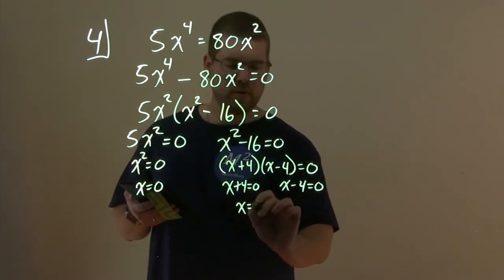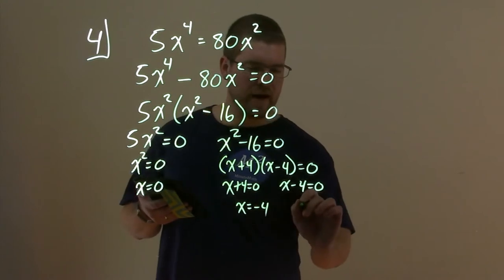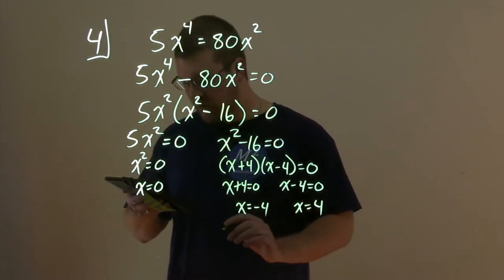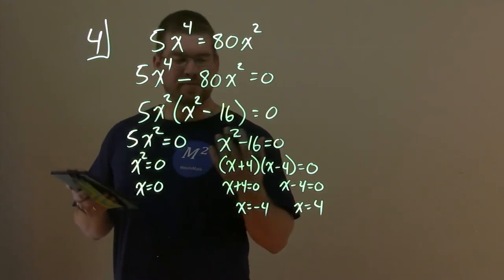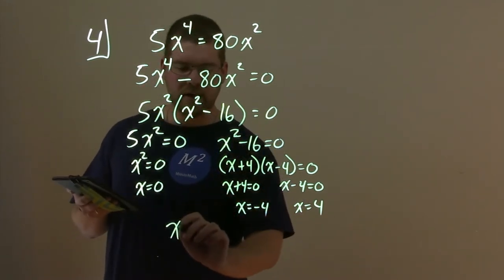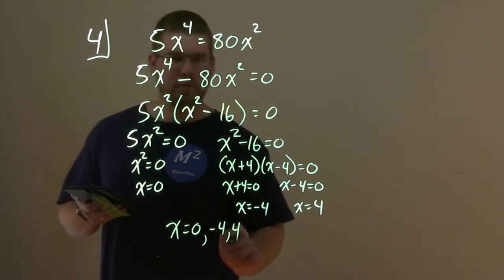So then subtract 4 to both sides. x equals a minus 4. Add a 4 to both sides here. x equals a positive 4. So our 3, or 4, 4 solutions come from really 3 as x = 0, negative 4, and positive 4.